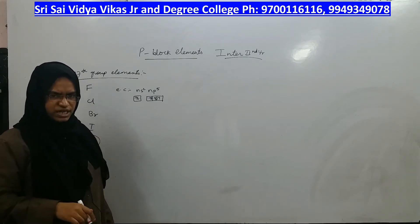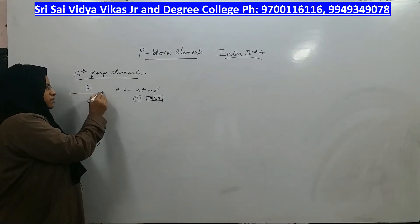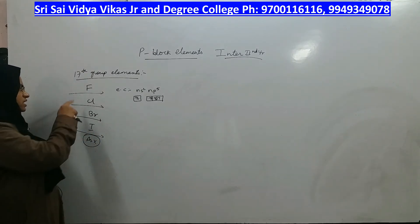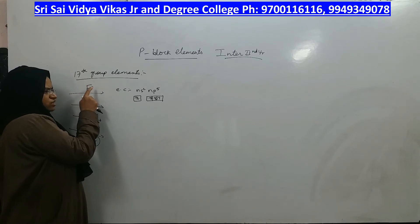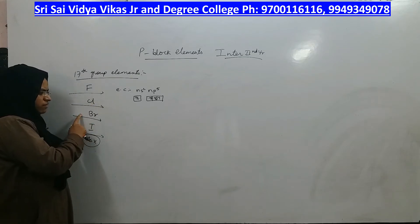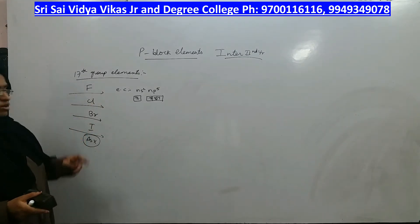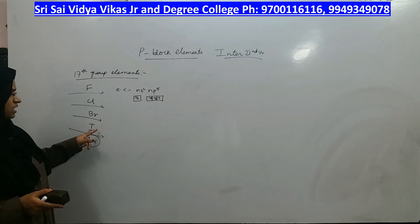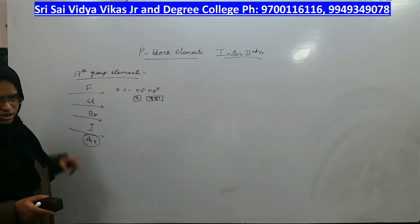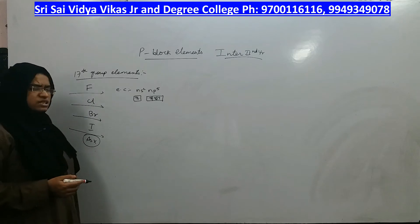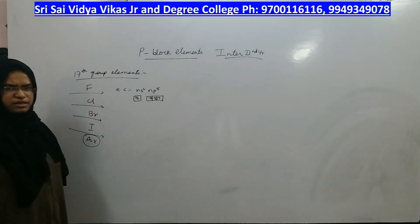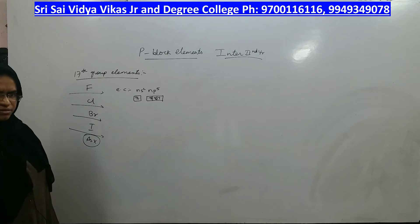Halogens come just before the noble gases, and within their particular period they have the smallest atomic size. In the second period, the smallest size belongs to fluorine; in the third period, the smallest size belongs to chlorine, and the same applies to bromine and iodine in their respective periods. Therefore, their effective nuclear charge is also very high compared to other elements in the same period.